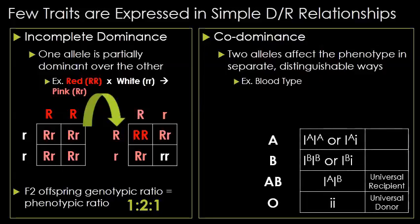Codominance is a bit different. In this case, both phenotypes are expressed completely separately, not blended like they were in incomplete dominance. Blood type is the most common example. If I have two A alleles, I have type A blood. If I have two B alleles, I have type B blood. If I have an A and a B allele, I have type AB blood — they're both expressed completely separately.